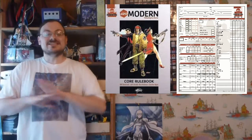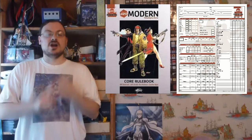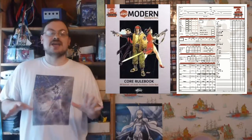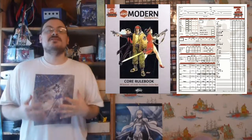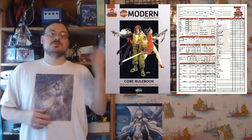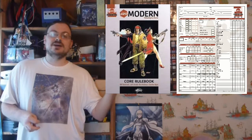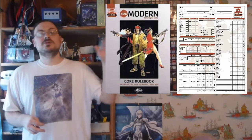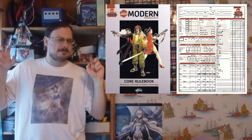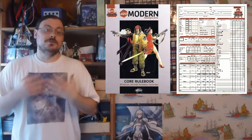The ability scores are exactly the same as those two other systems: Strength, Dexterity, Constitution, Intelligence, Wisdom, Charisma — all the same. And the modifiers work exactly the same too. You would take the score, subtract 10 from it, and whatever number you have left, divide it by 2. If it's a positive number, round down; if it's a negative number, round up. And then you figure out what your ability score modifier would be.